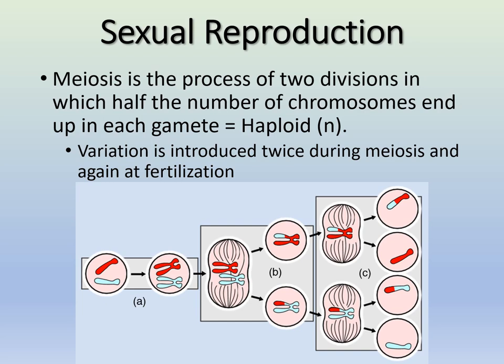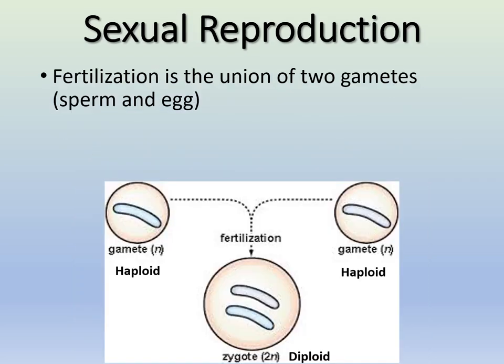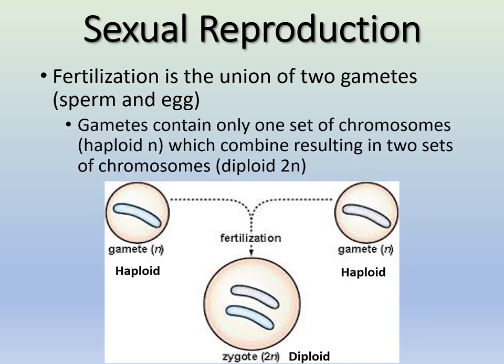Whatever half of the chromosomes those gametes have — that's what's going to end up being that organism. It's really a draw out of a hat. Fertilization is the union of two gametes: a sperm and an egg, which are both haploid cells, combine to result in a diploid cell called a zygote. Our gametes combine to form a zygote, which now has all the chromosomes needed to start dividing, growing, and becoming an organism.